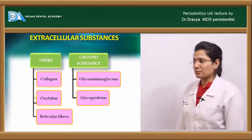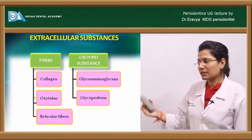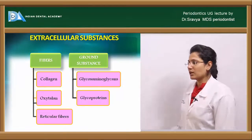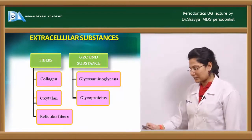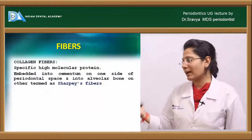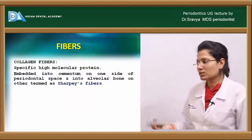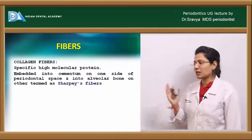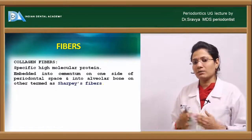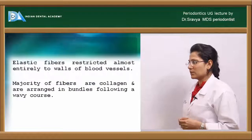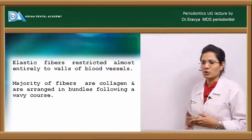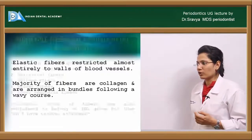The extracellular substances include fibers and ground substance. The fibers mainly comprise collagen, oxytalin fibers, and reticular fibers. The ground substance includes glycosaminoglycans (GAGs) and glycoproteins. Collagen fibers are the most important fiber group, found in bundle form embedded from the cementum and alveolar bone into the periodontal ligament space. The terminal ends of these fibers are called Sharpey's fibers. Elastic fibers are mostly restricted to blood vessels. The majority of the fibers are collagen, arranged in bundles following a wavy course.